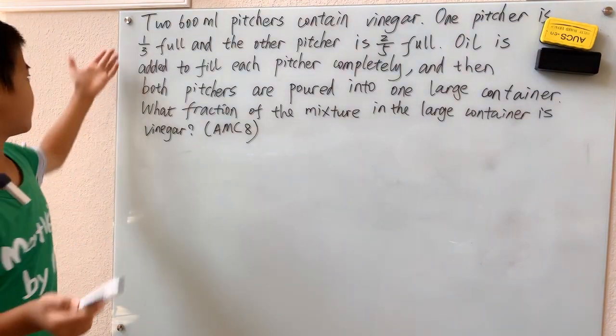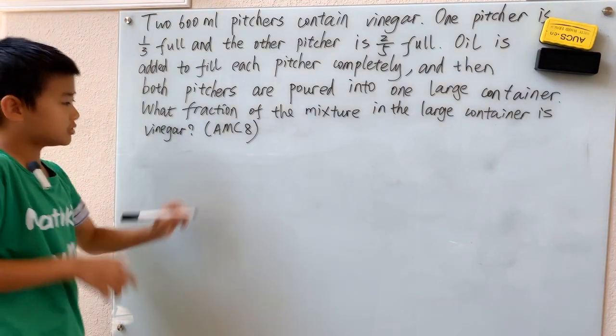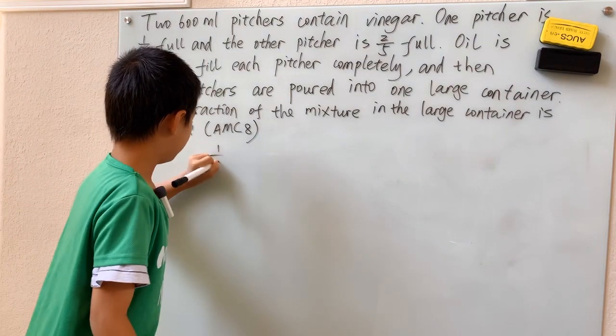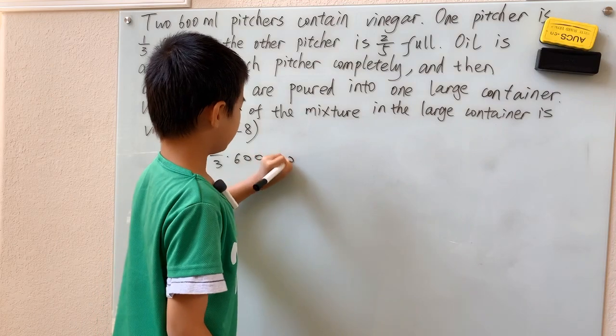The first way is to see one-third full of a 600 milliliter pitcher. One-third of 600, that's just 200.